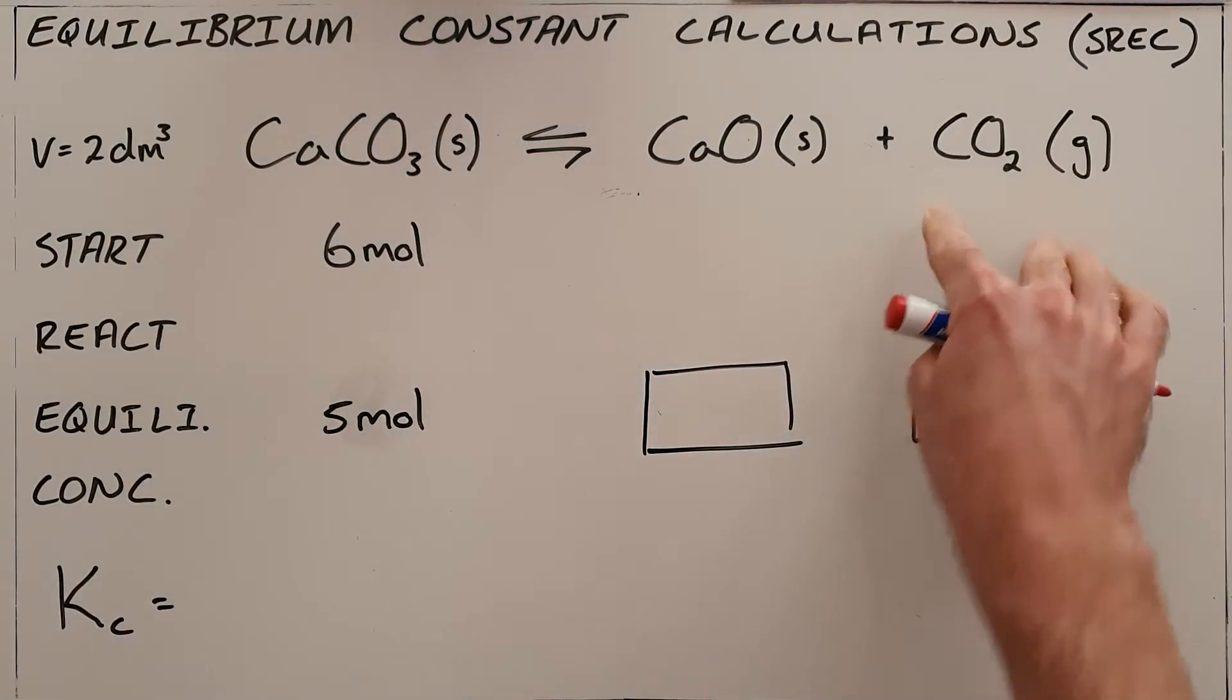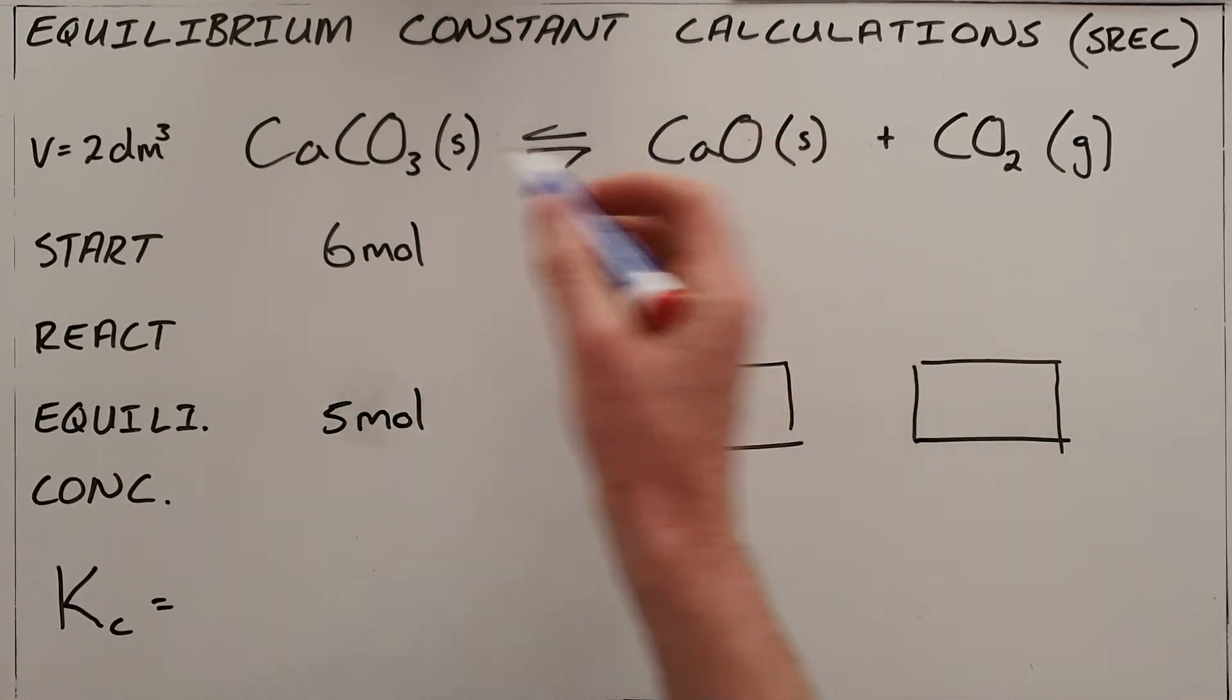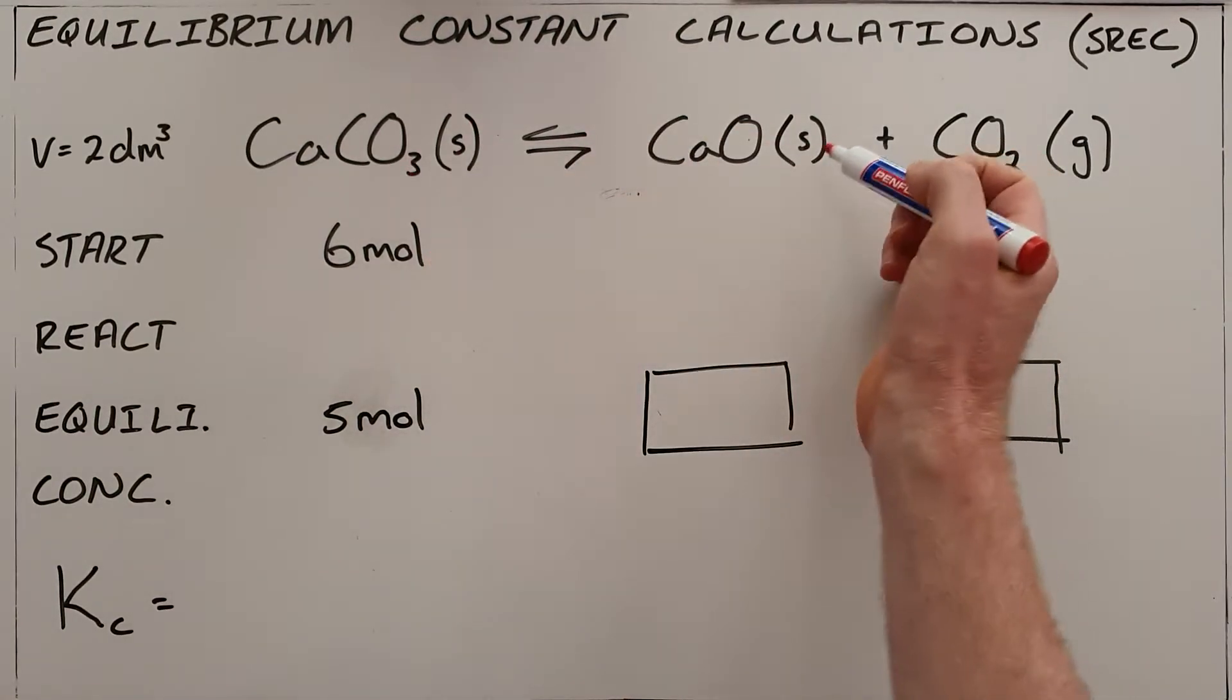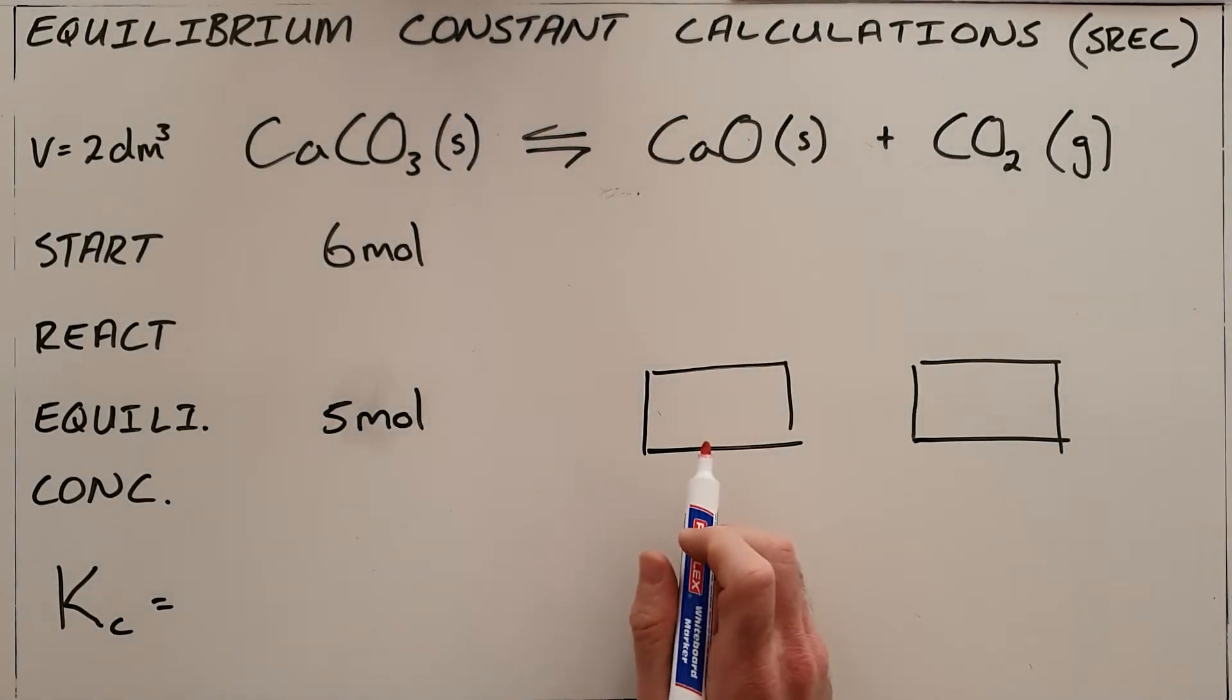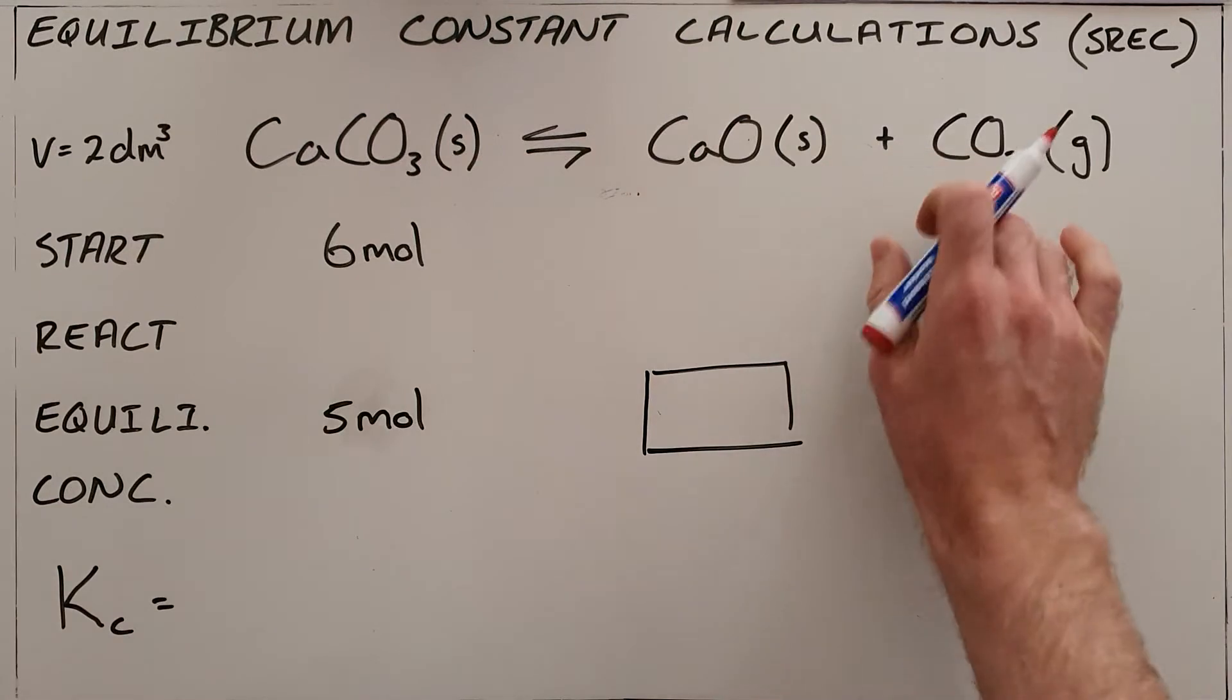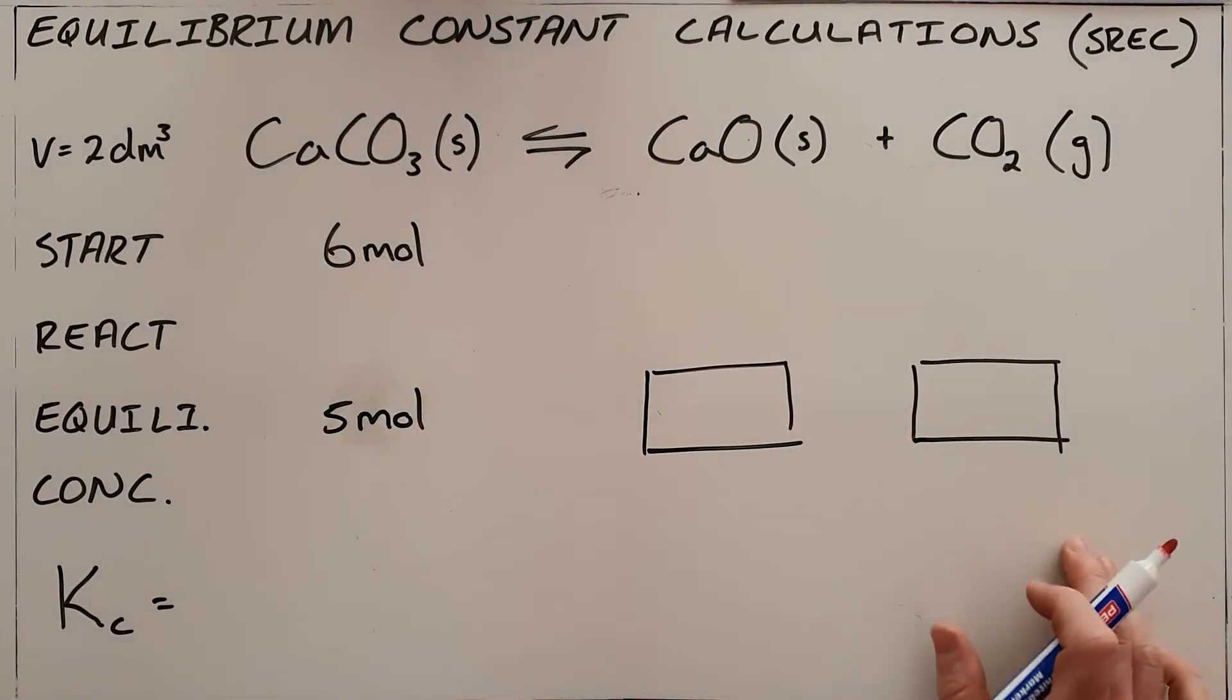We understand now that in chemical equilibrium we have this dynamic equilibrium in which reactants are forming products at the same time that products are forming reactants. So the reaction reaches an equilibrium where the amount of each substance present remains constant and we need to be able to do calculations to determine what those amounts are.